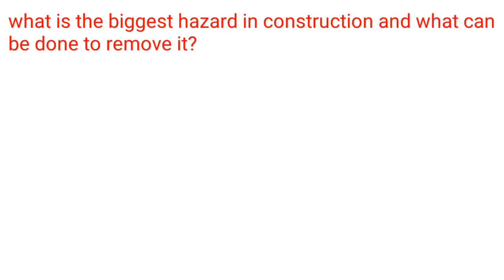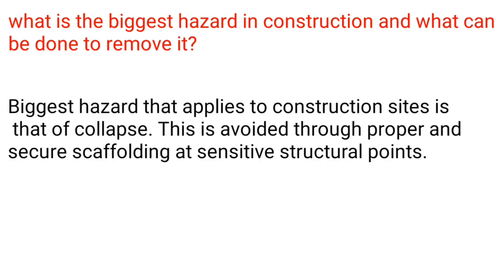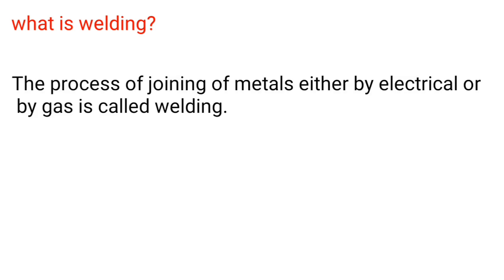What is the biggest hazard in construction and what can be done to remove it? The biggest hazard that applies to construction sites is that of collapse. This is avoided through proper and secure scaffolding at sensitive structural points.